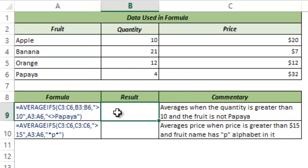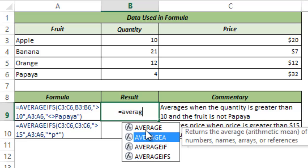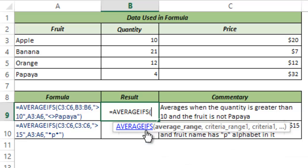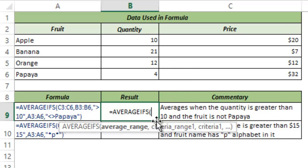To do that I type AVERAGE and as I type, you can see Excel prompts the names of the functions. I go to AVERAGEIFS and hit Tab to auto-complete the function. You can see it takes a number of arguments. The first one is AVERAGE_RANGE — this is the set of values that you want to average out. In our case it would be the price points.